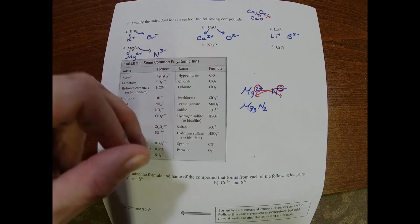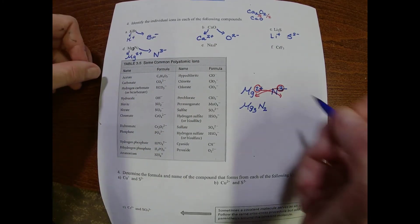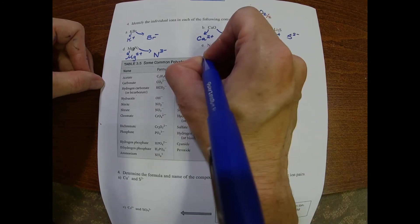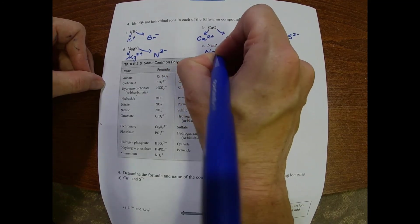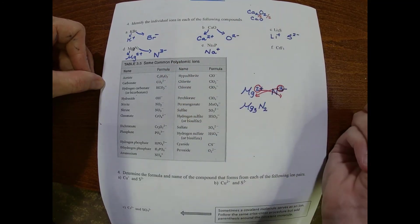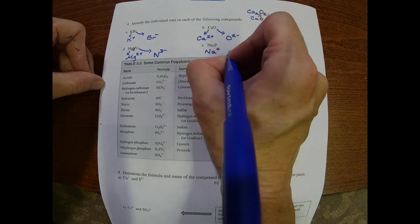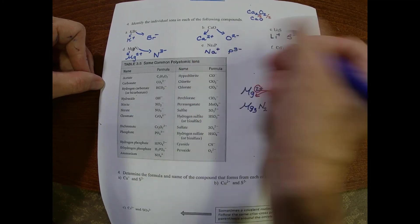On the next one, hopefully that one's okay. We have sodium with a +1 and phosphorus is in group 5 so we'll do a 3- on our phosphorus.